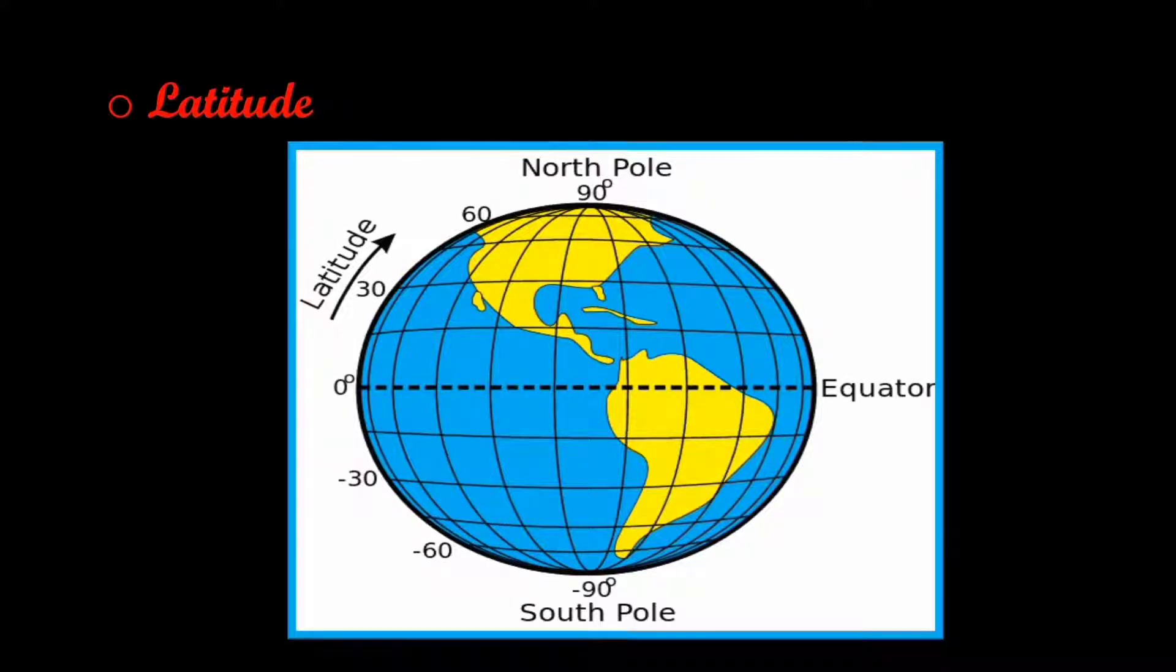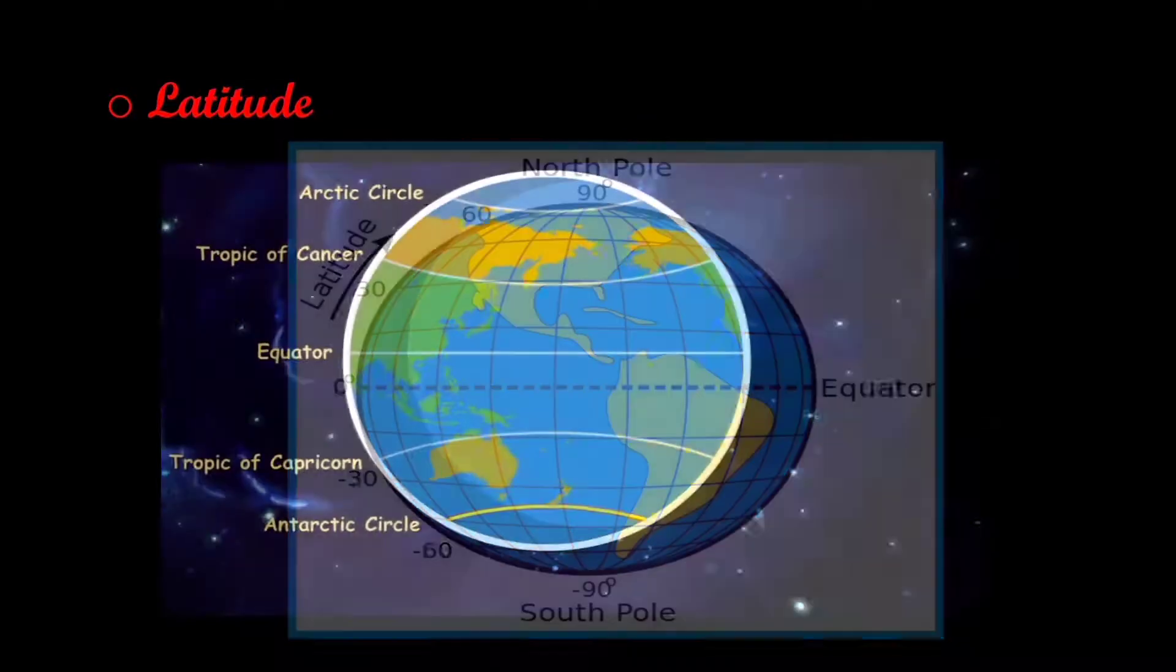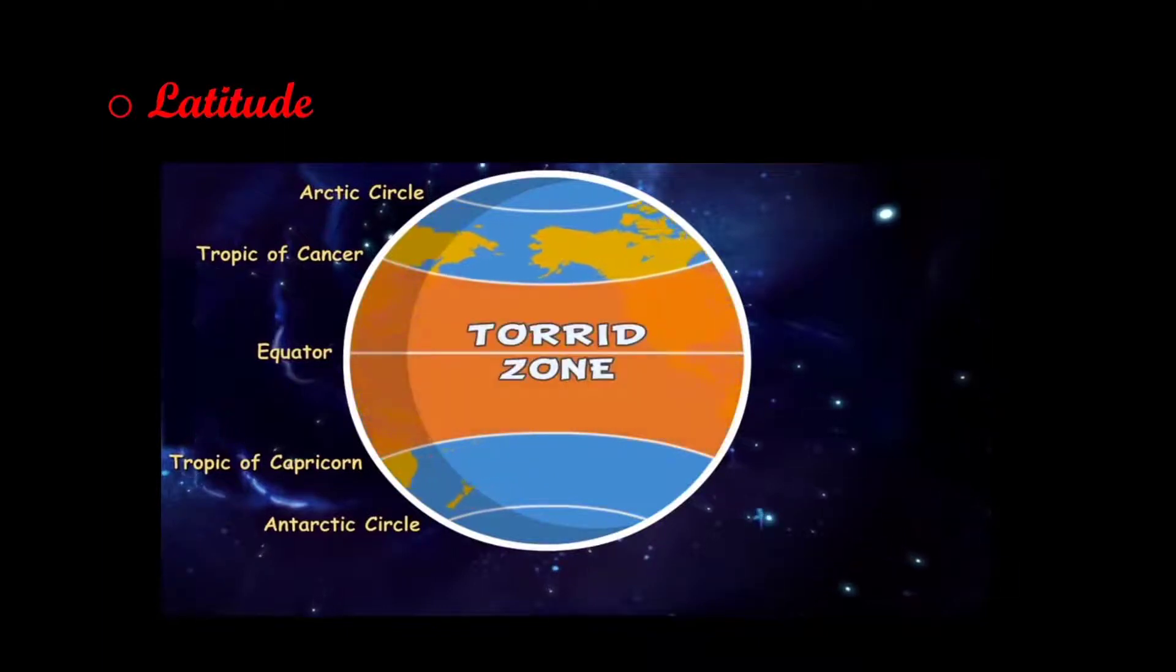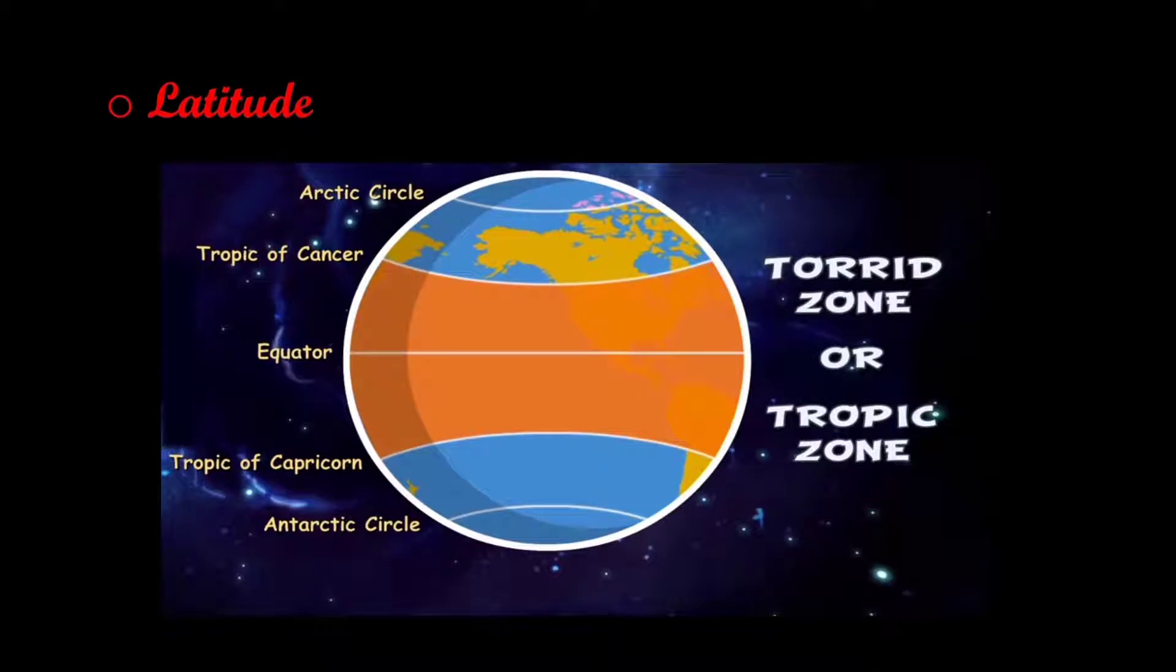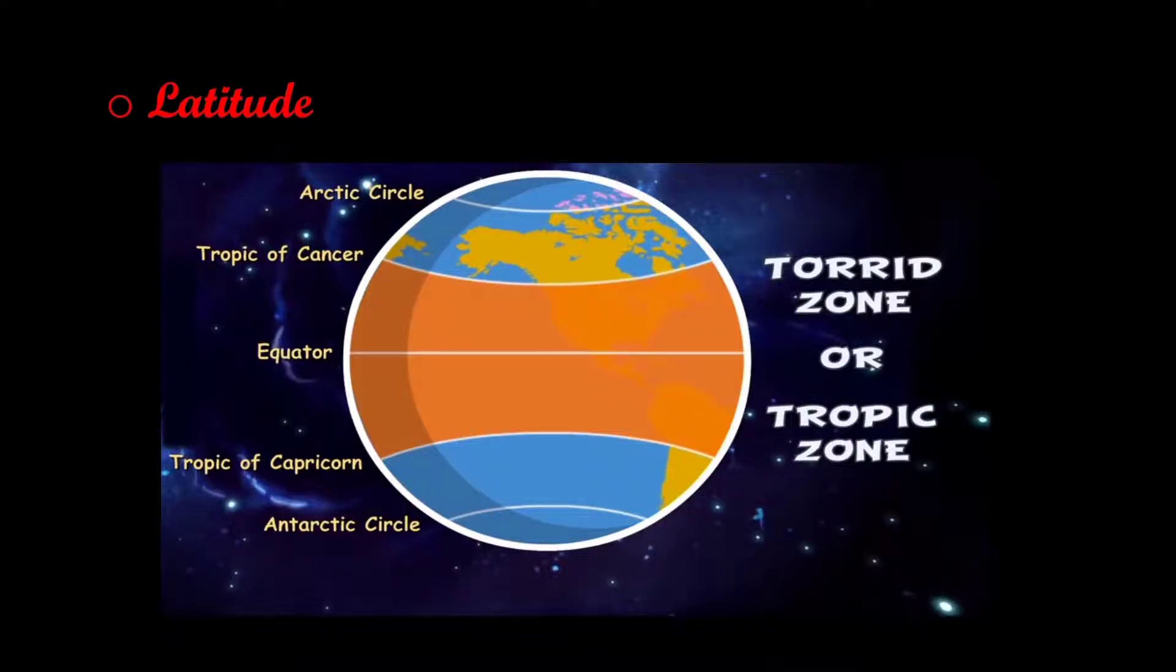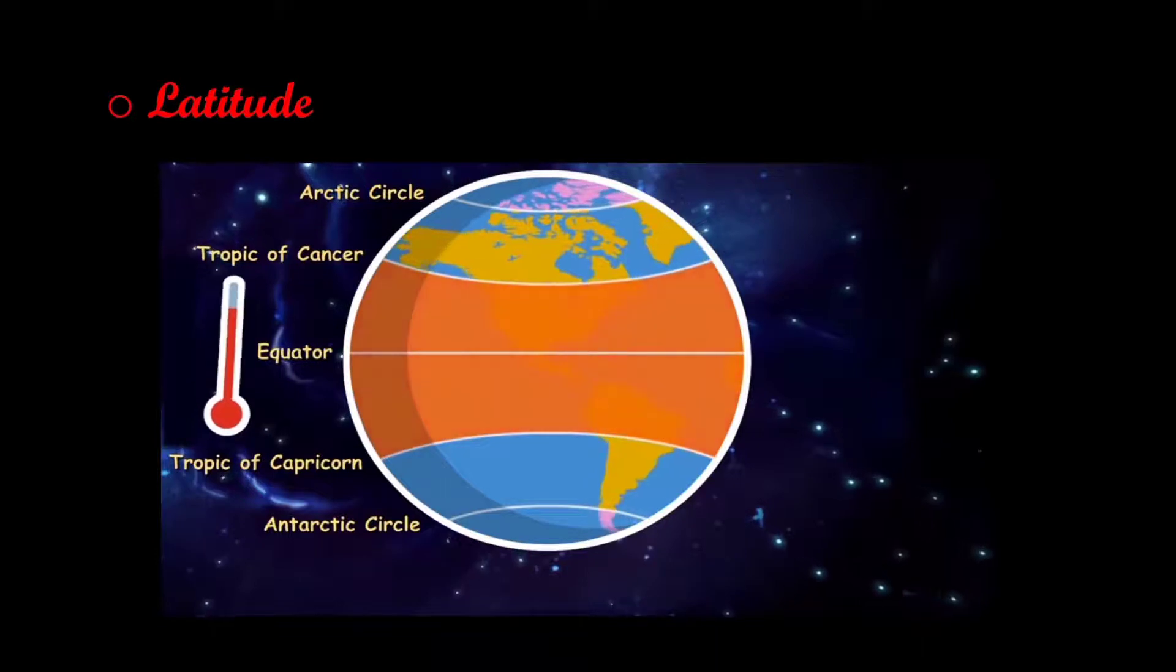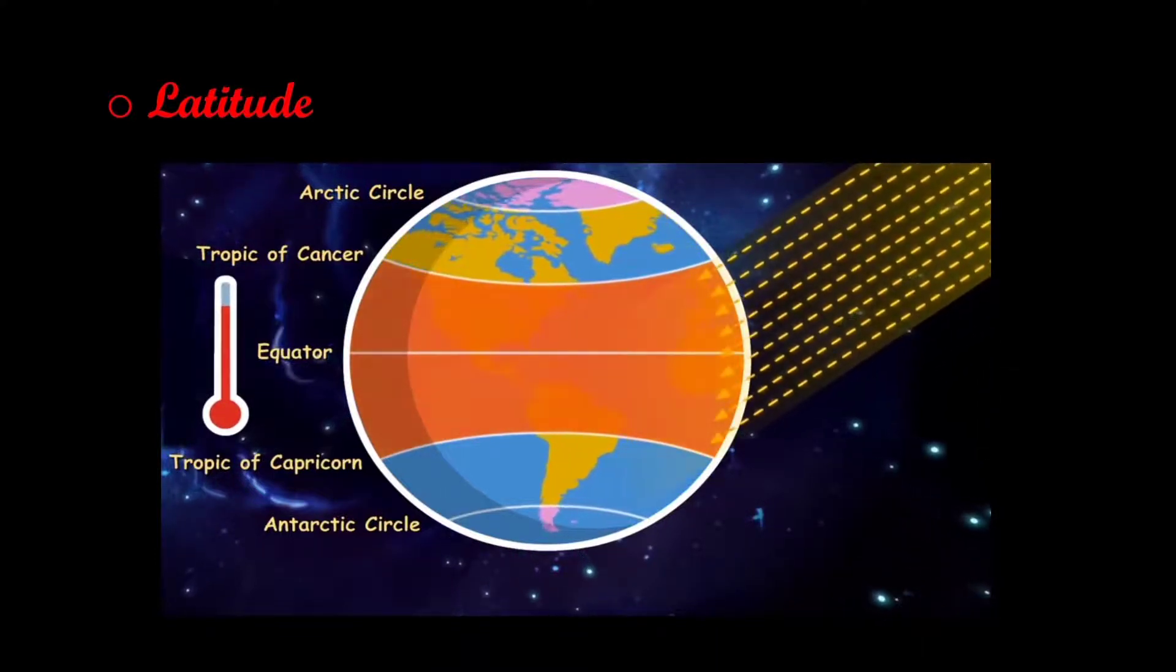Latitude: The earth is divided exactly into half by an imaginary line called the equator. Latitude denotes a region of the earth in relation to its distance from the equator. The region between the two tropics is the torrid zone or the tropic zone, refers to the area of the earth near the equator. This is the hottest part of the earth. The sun rays fall directly on the equator.